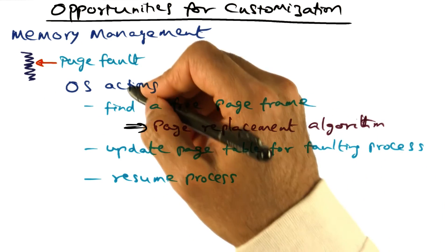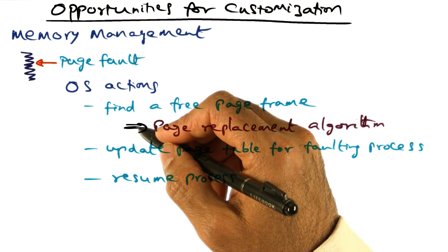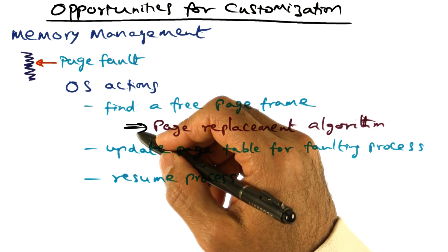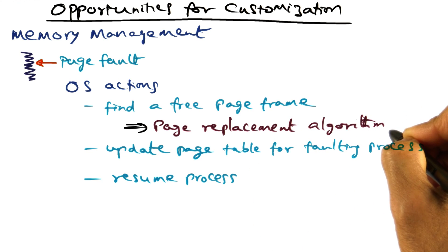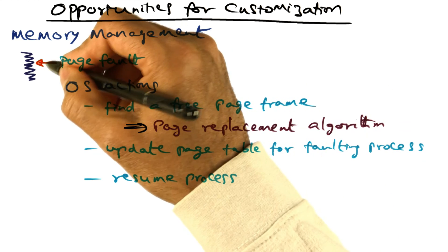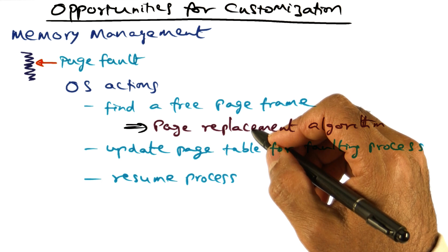One thing that I haven't told you in the sequence of actions that the operating system takes is that every so often the operating system runs a page replacement algorithm to free up some page frames in readiness for allocating the frame to a page fault that a process may incur.